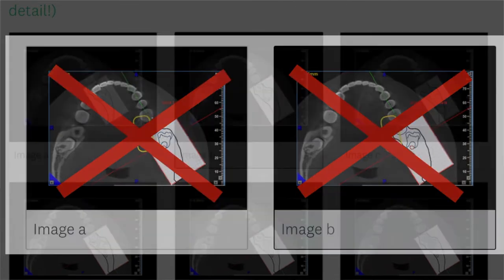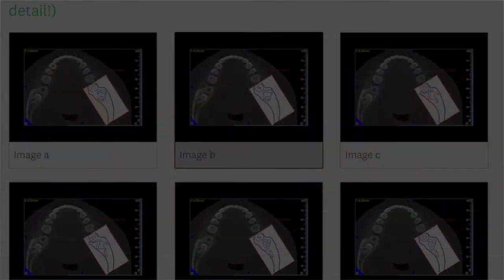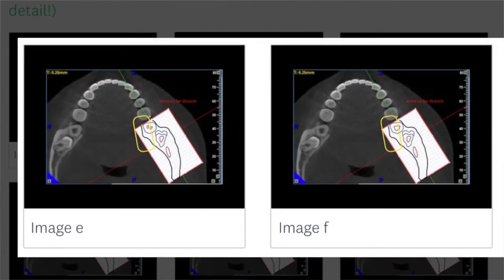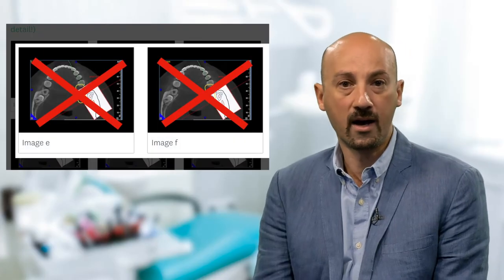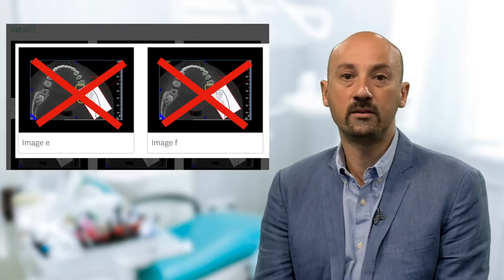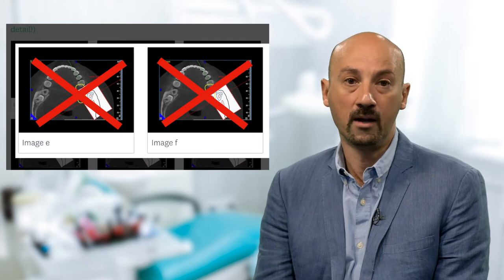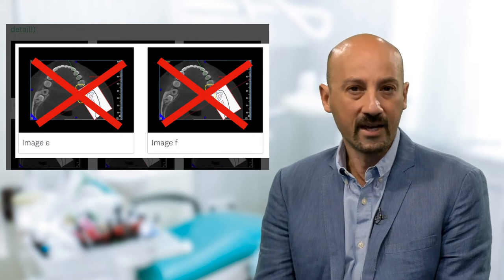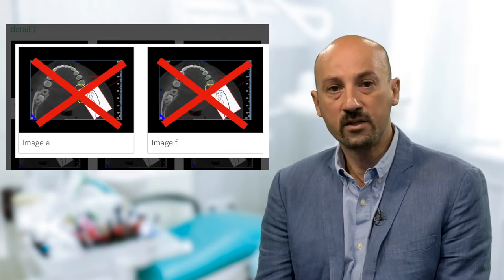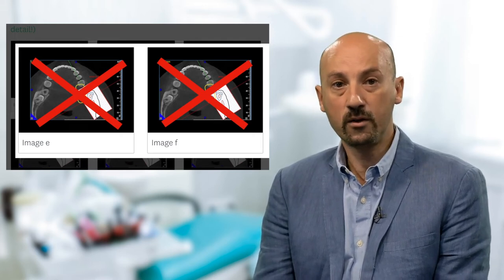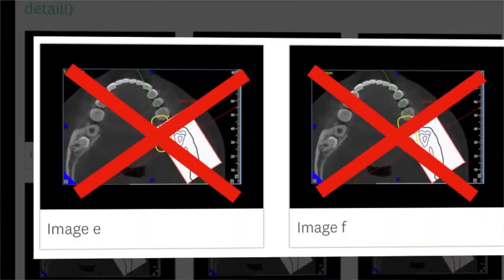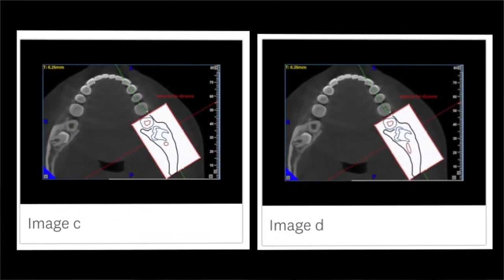Also, slices E and F are to be discarded for the same reason. There might be many more observations we can have with regards to the angle of the wisdom tooth, for example, but at this stage this observation is enough to leave us with only two slides to choose from: C and D.